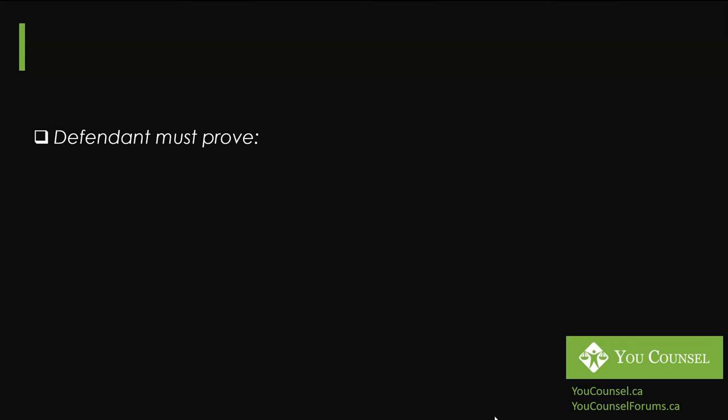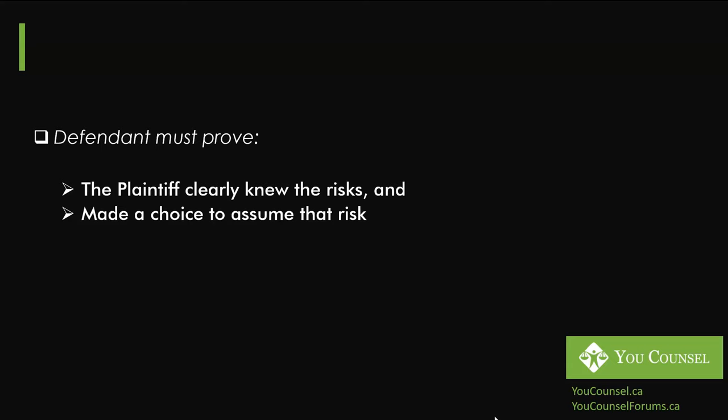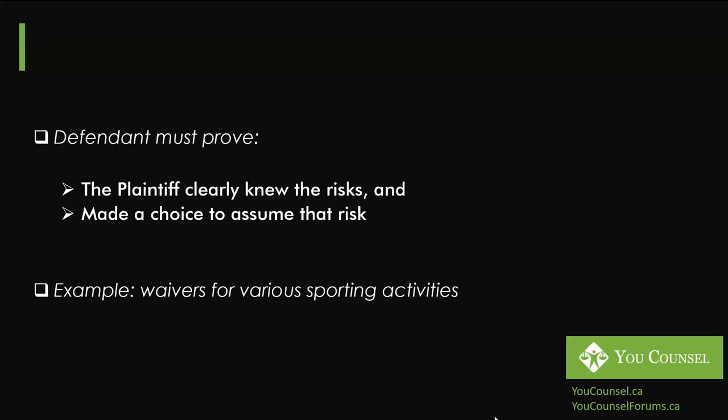Voluntary Assumption of Risk requires the defendant to prove two things: first, that the plaintiff clearly knew the risk of the activity, and second, that the plaintiff made a choice to assume that risk. Both components must be shown. In daily life we deal with this constantly — we sign waivers for various activities. For example, at ski resorts, virtually everyone signs a waiver stating there are risks inherent in skiing, and that if you get hurt you are making that choice yourself.